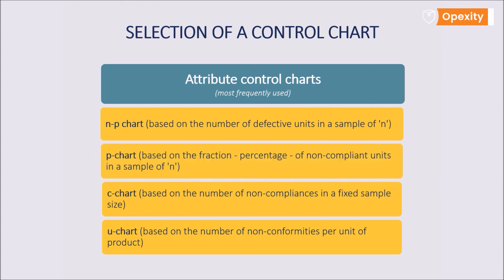P chart, these are used to examine the percentage of non-conformities in a sample of N. This chart can be used to control products with major defects, of which there are relatively many, more than 5%.